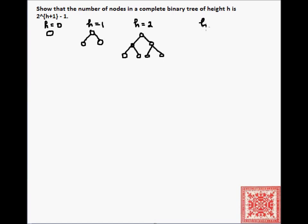So, this is a complete binary tree of height 2. And let's also draw a complete binary tree of height 3. In a complete binary tree, every possible position on every level must be filled.